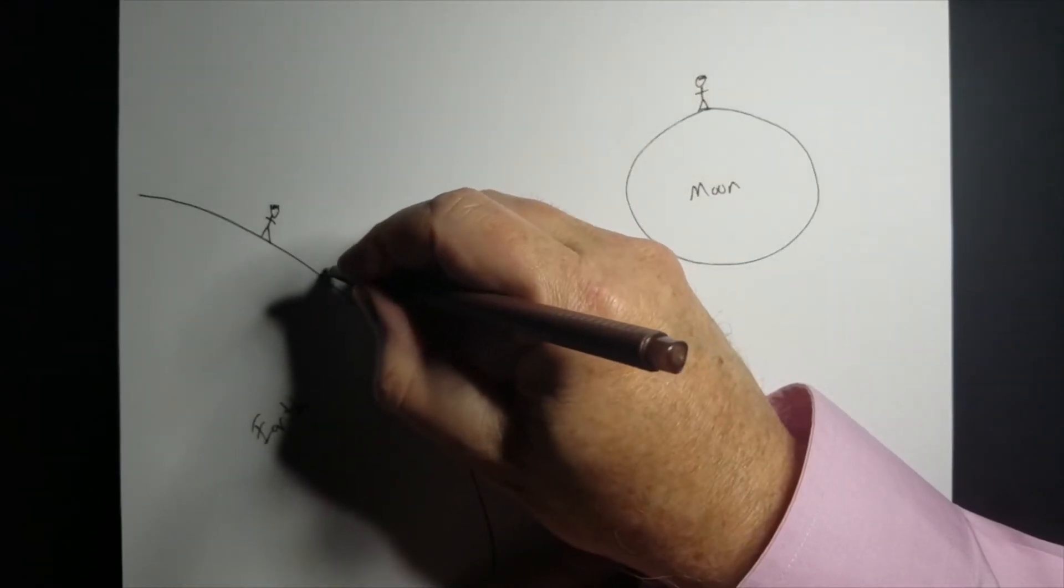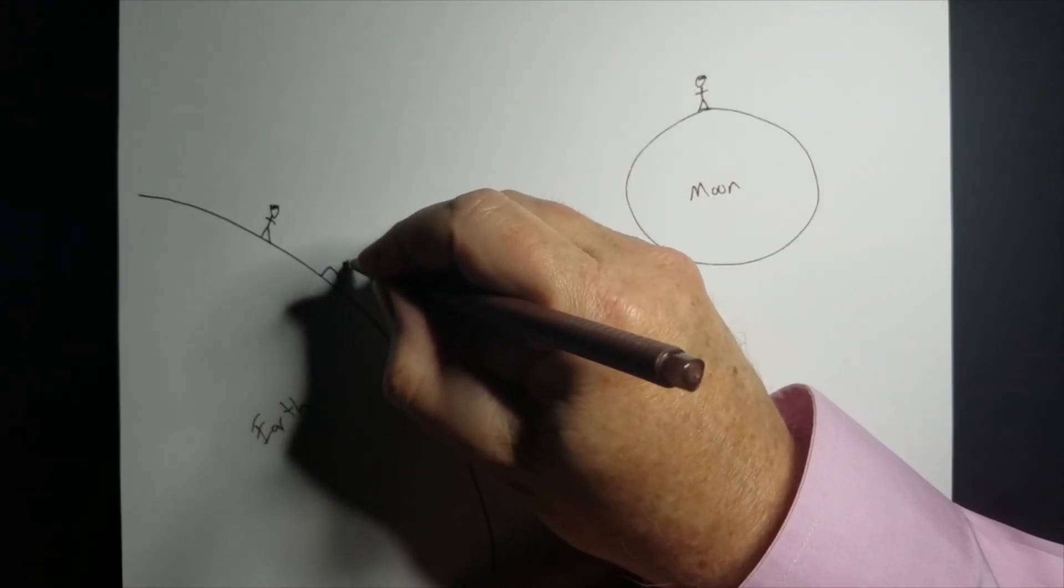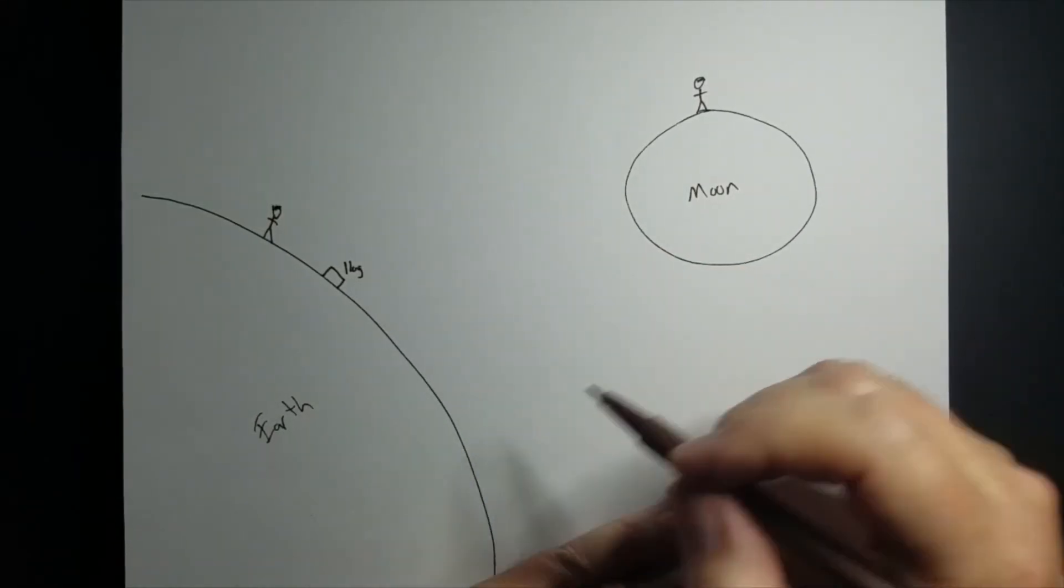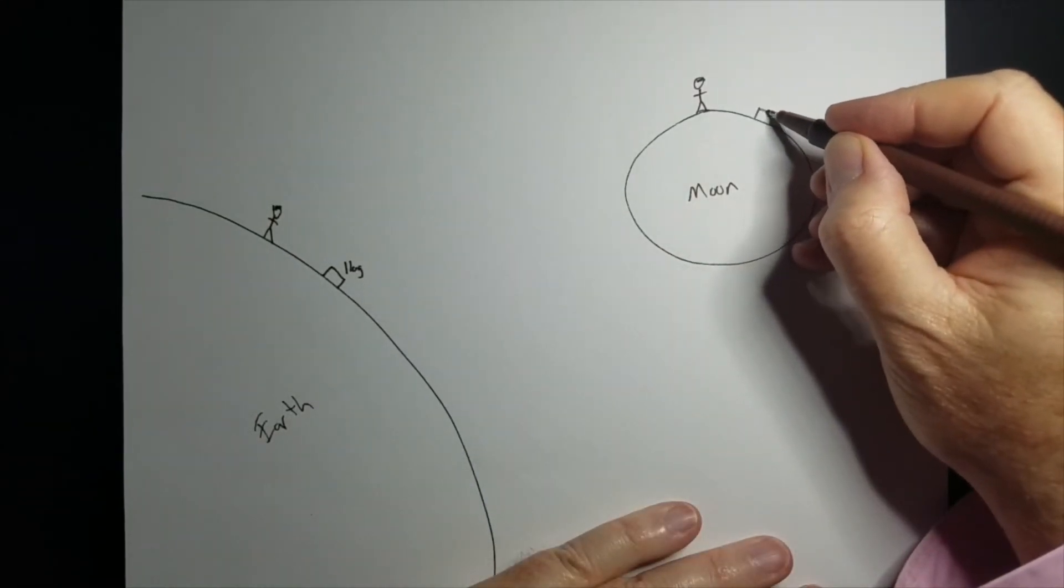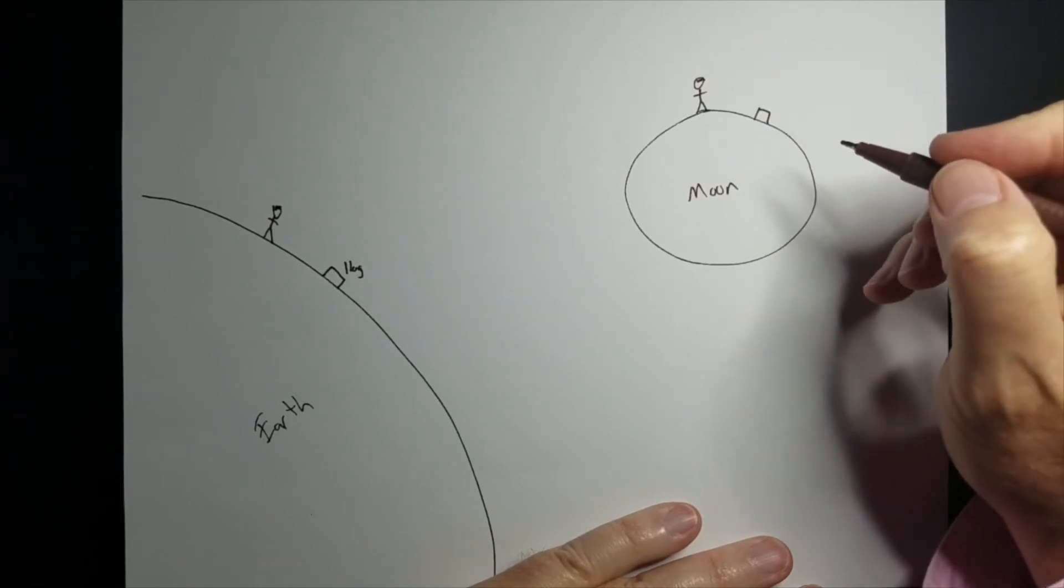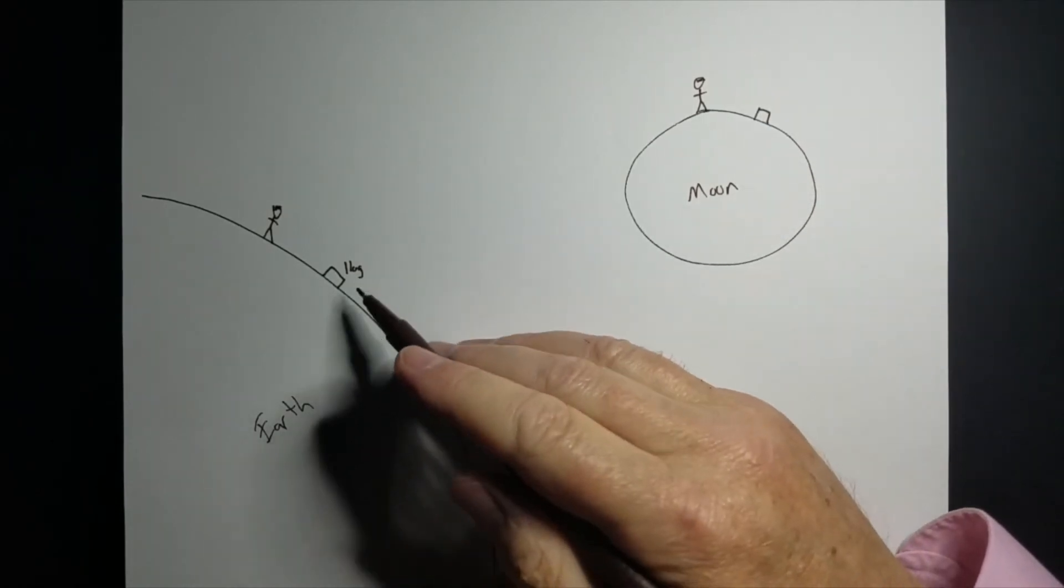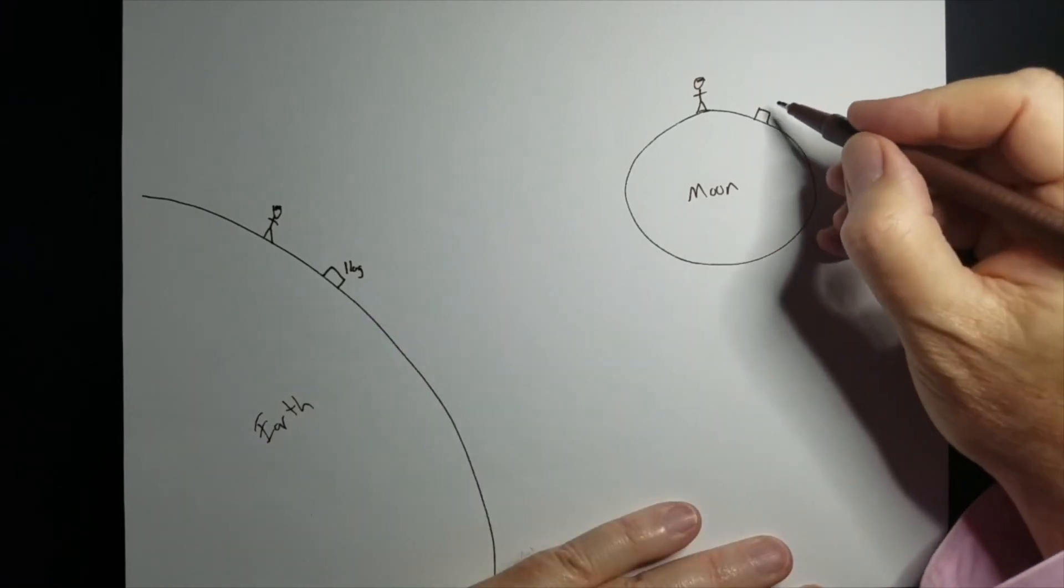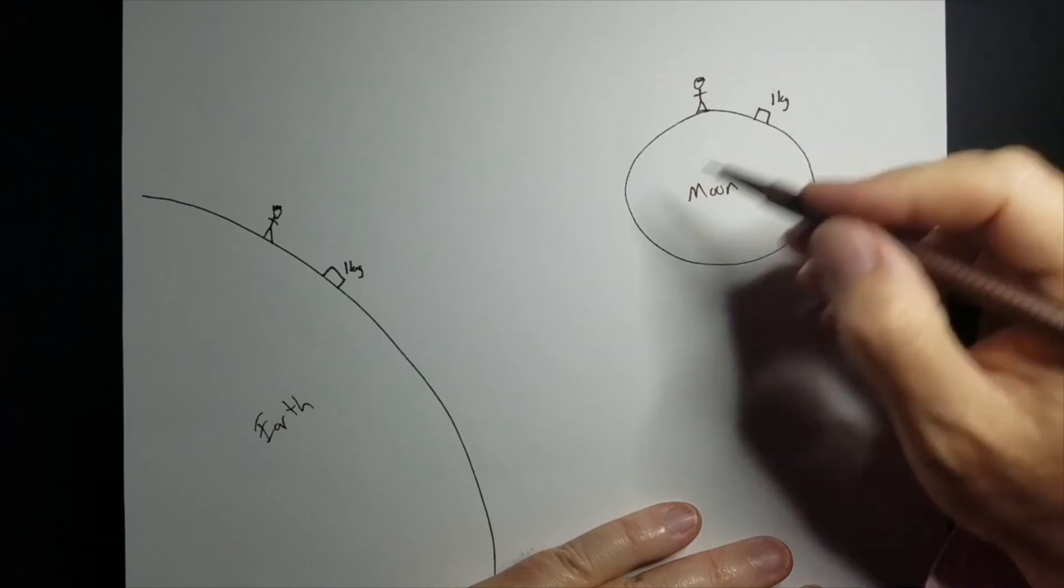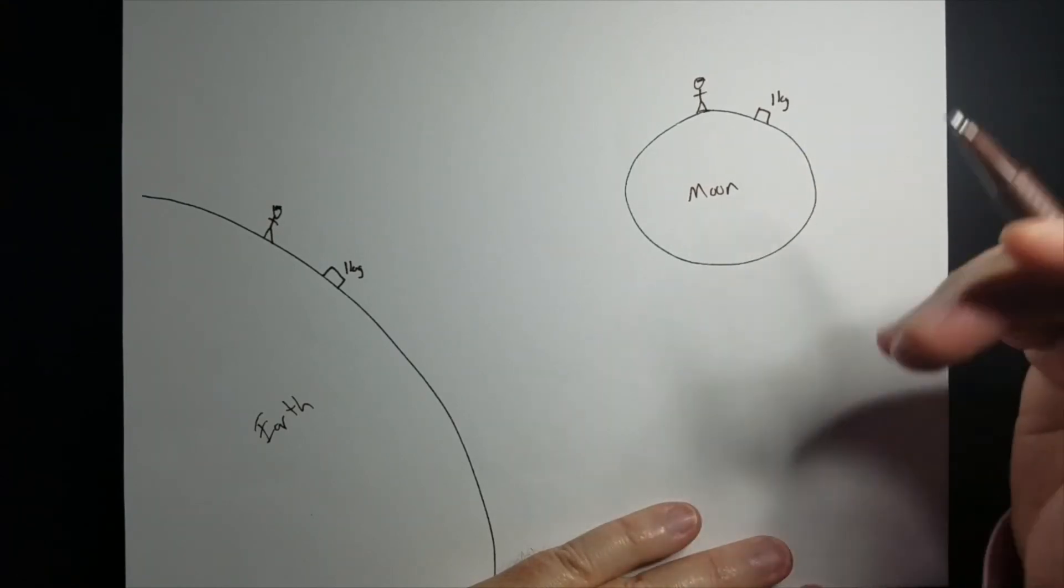So, if I had a one kilogram chunk of gold on the Earth and we moved it to the moon, what would you notice about its mass? Well, if it's one kilogram on the Earth, it's also going to be one kilogram on the moon. Gravity doesn't affect mass. It's just how much stuff is there.